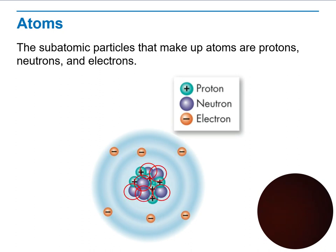Now, the subatomic particles that make up atoms are protons, neutrons, and electrons, as we just said.